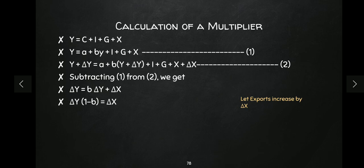Taking all delta Y terms to the left-hand side, I get delta Y times (1 − b) = delta X. Since the export multiplier value is delta Y upon delta X, if I solve it I get the value of the export multiplier as 1 upon (1 − b). And b is the marginal propensity to consume, so 1 − b is the marginal propensity to save. That is the value of the export multiplier.